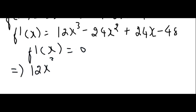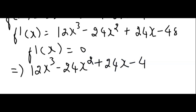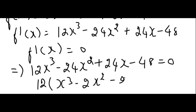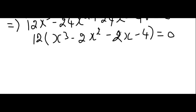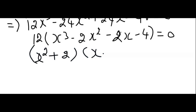To find maximum or minimum values, equate f'(x) = 0: 12x³ − 24x² + 24x − 48 = 0. Taking 12 as the common factor gives x³ − 2x² − 4 = 0. Factorizing, we get (x² + 2)(x − 2) = 0, which clearly gives x = 2.